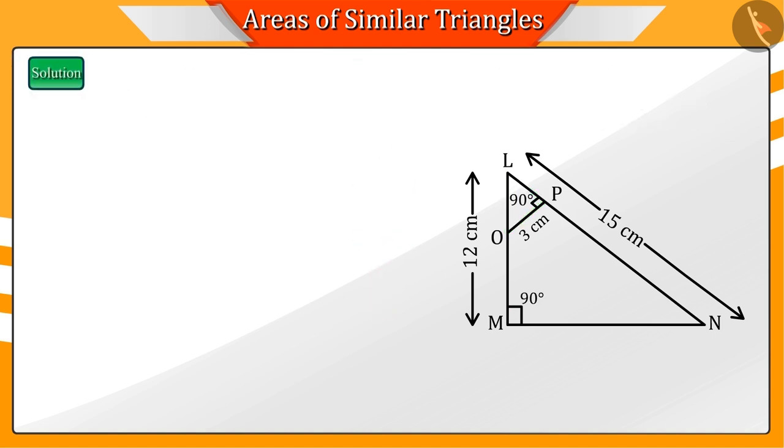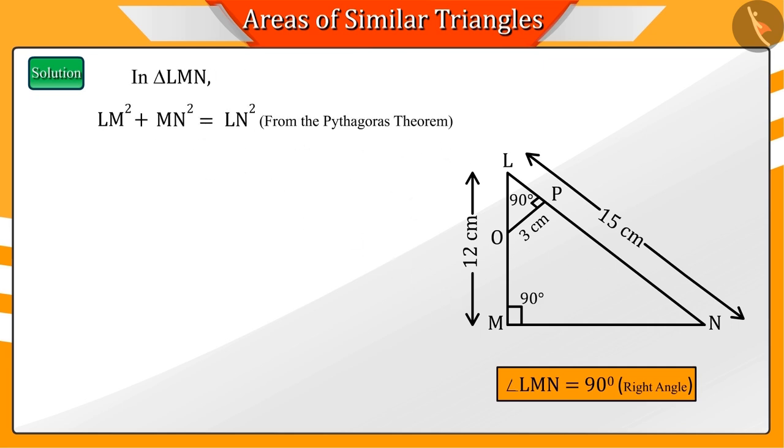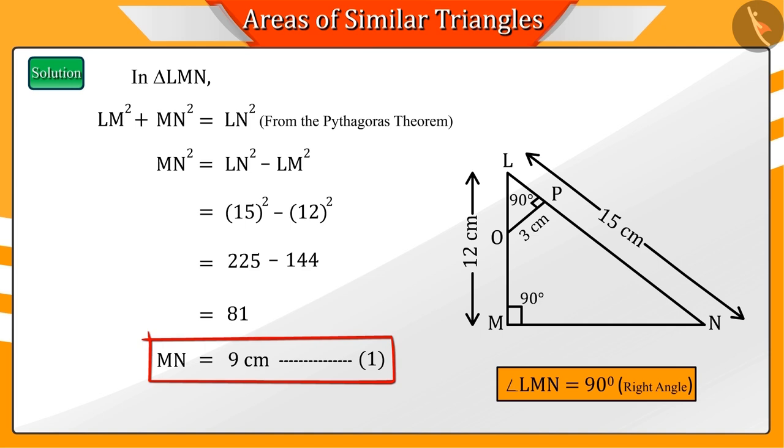Let's solve this. As given, triangle LMN is a right-angle triangle. So, using the Pythagoras theorem in triangle LMN, the value of MN is 9 centimeters.